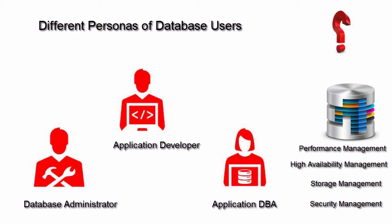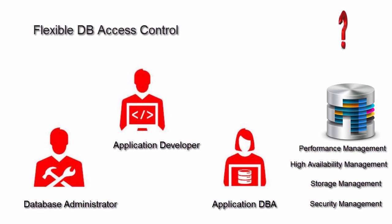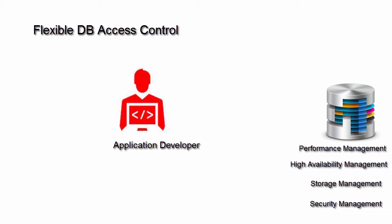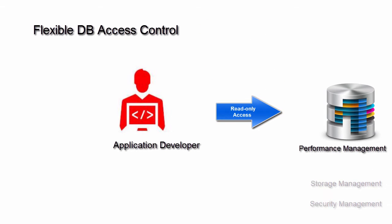Thus, the user was granted more privileges that did not necessarily map to his business persona. Flexible DB access control privileges in EM13c are modeled to align new out-of-box privileges introduced with different database personnel and hence provide tighter access control on managed target databases. For example, enterprises may now configure their application developers to have read-only access to view the performance management report for a production database target.